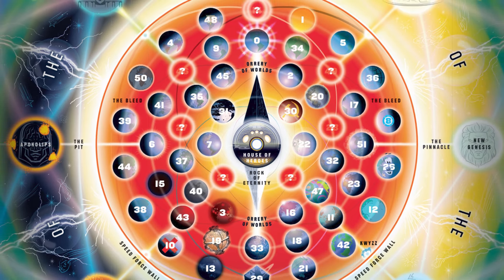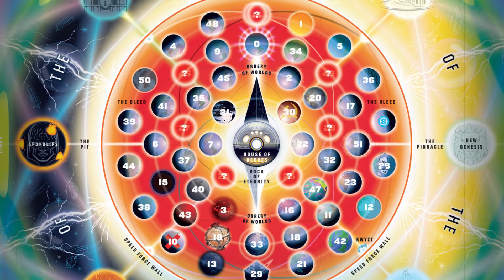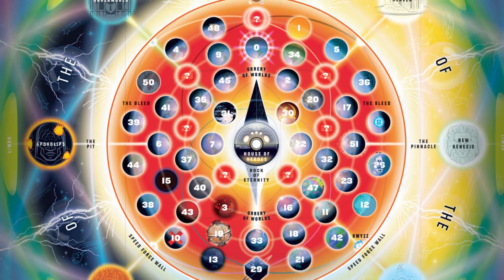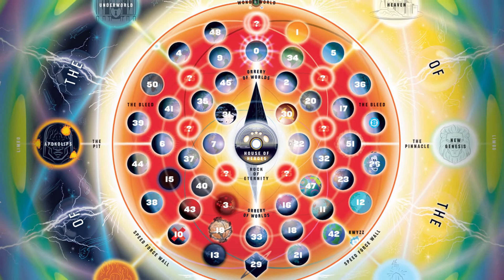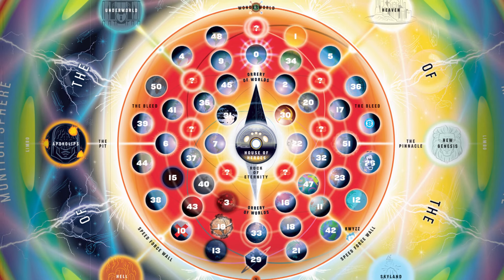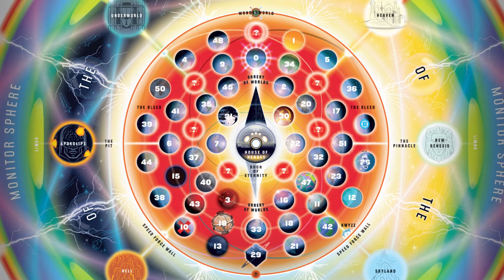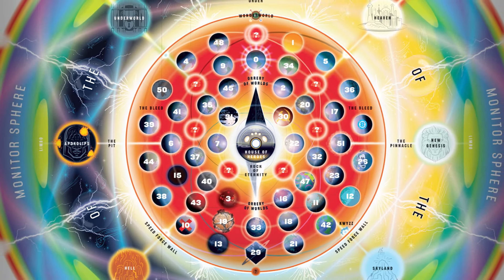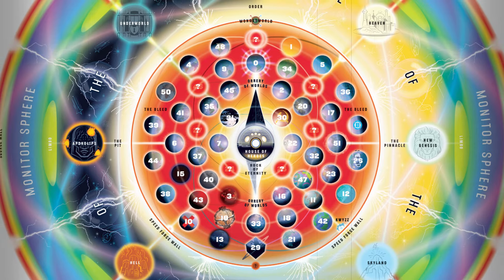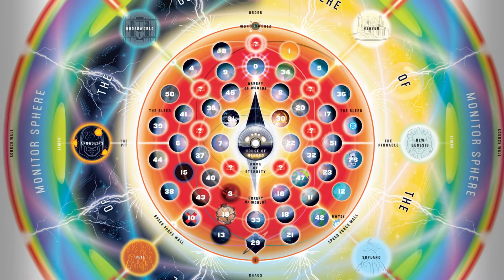My personal theory — big shoutouts to WallyWest.exe — is that it's probably the lightning that exists in between each major sphere and the sphere of gods coming down from the Source Wall. That would probably be my theory for the Speed Force. So it might be on here, but not 100% confirmed or anything along those lines.